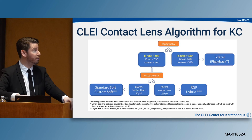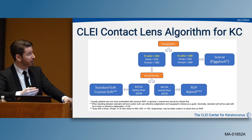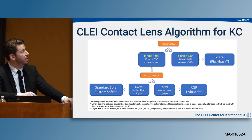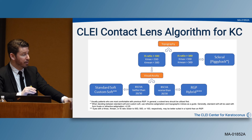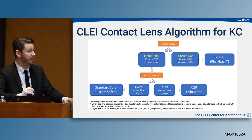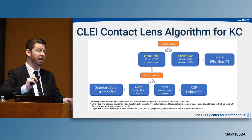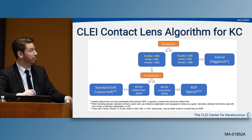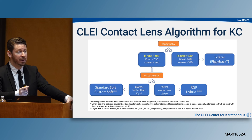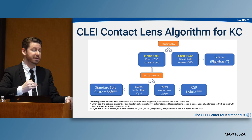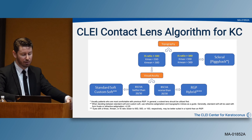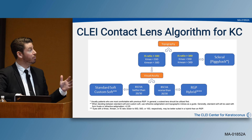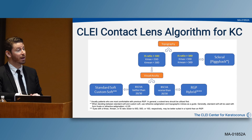At CLEI, a retrospective review of keratoconic contact lens patients produced the following pre-publication algorithm. For corneal topography, significant values are an IS value of 10 diopters, a K-max of 55 diopters, and a K-mean of 50 diopters. If greater than those metrics, we consider scleral piggyback lenses. If less, we look at whether best-corrected spectacle visual acuity is better or worse than 20/30 to decide between a standard soft lens, custom soft lens, RGP, or hybrid.